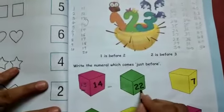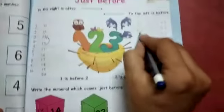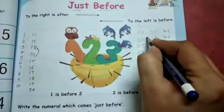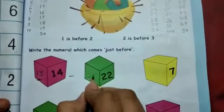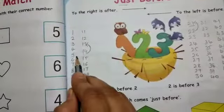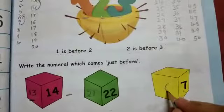Then next 22. 21 to 30 mein 22 aayega. 22 before, pehle kaunsa number hai? 21. Write down 21. Next, 7. Check karo ho, 7 number. 7 ke before, 7 ke pehle 6 number. Write down 6.